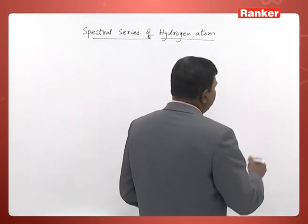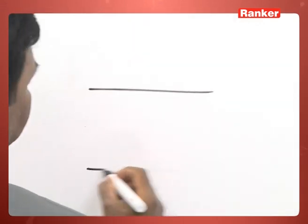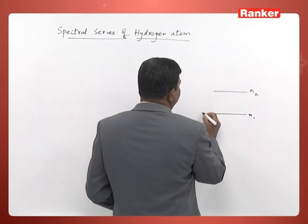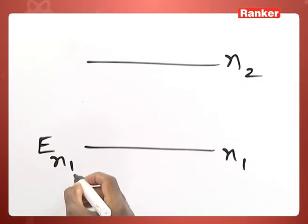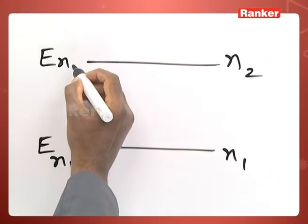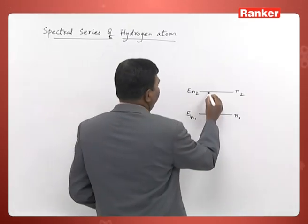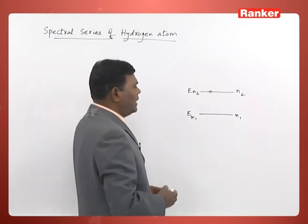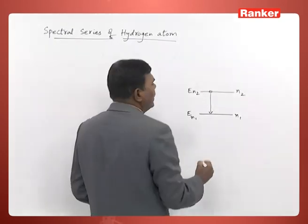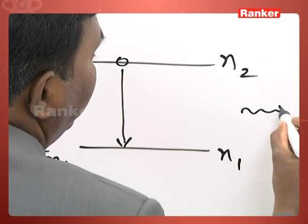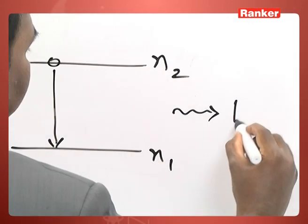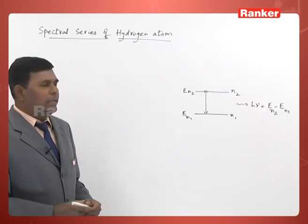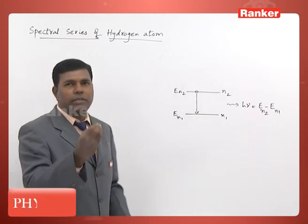In this particular case, consider a hydrogen atom with two given energy levels n1 and n2. Let En1 be the energy for the first energy level and En2 for the second energy level. Initially, if the electron is in the second energy level, the atom is in an excited state. A transition may take place from the higher energy level to the lower energy level, and the difference in the energies is emitted in the form of a photon. This photon has energy hν, which is equal to En2 minus En1.